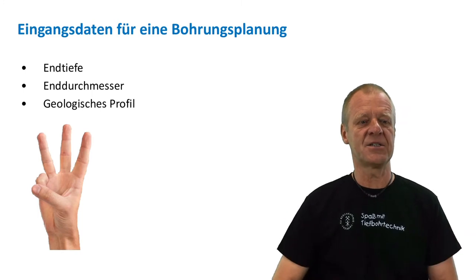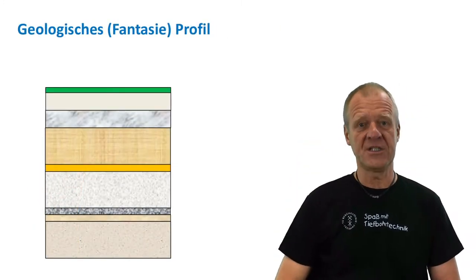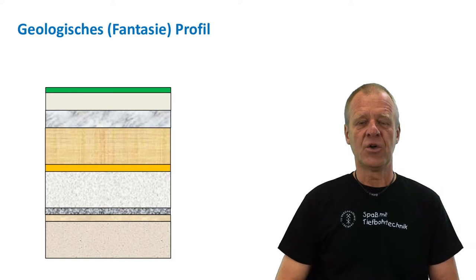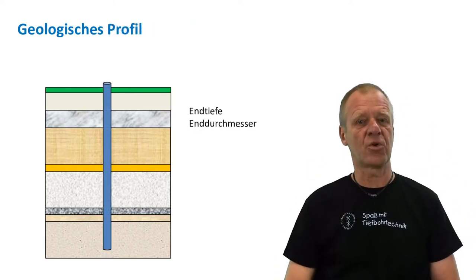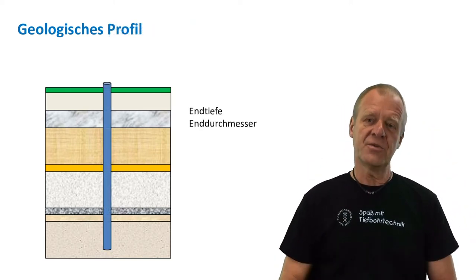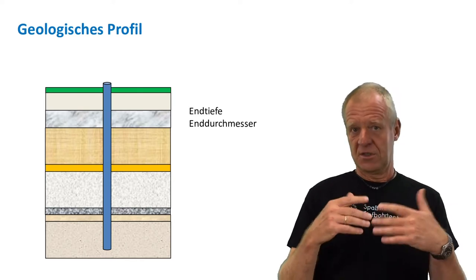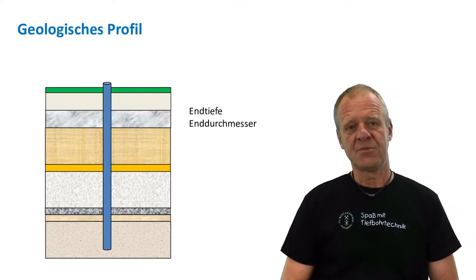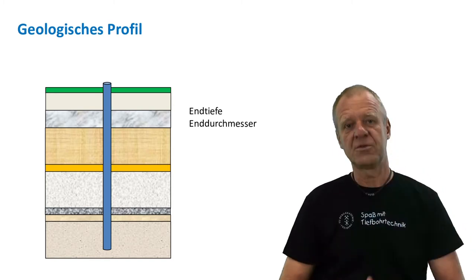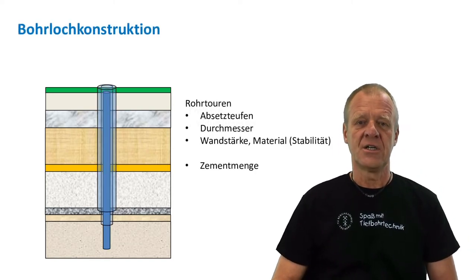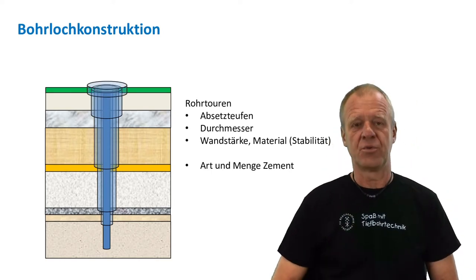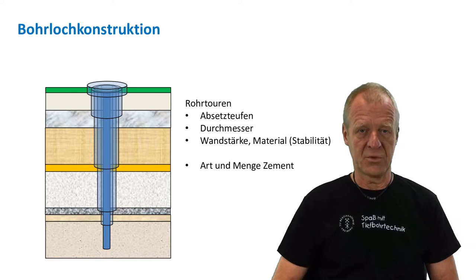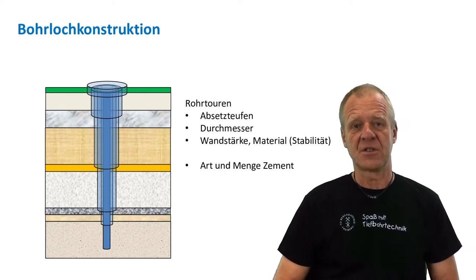Here we have an imaginary geological profile. In this profile we can easily draw our borehole with its final depth and diameter — that is the blue pipe you can see behind me. Now we have to take a deeper look at our geological profile and look for formations which could become unstable along our well path while drilling from top to bottom. Each time the well needs to be secured we have to install a casing, and this finally results in the so-called borehole construction with all the casings we can see here.